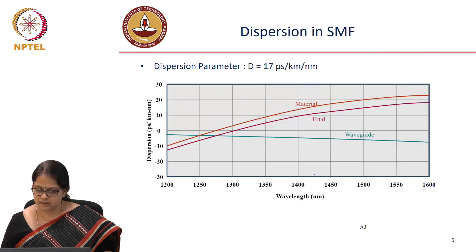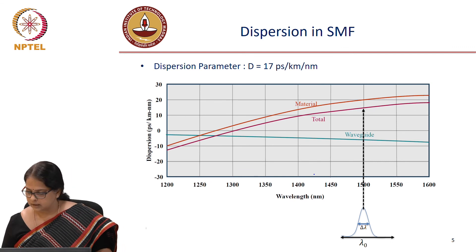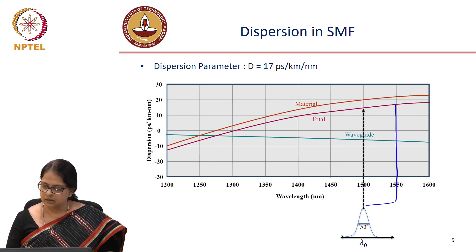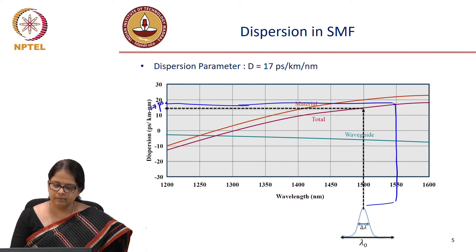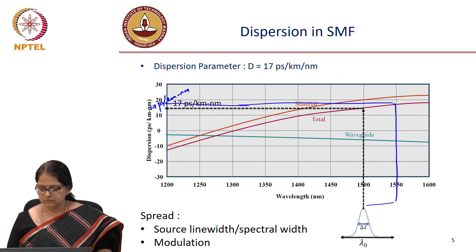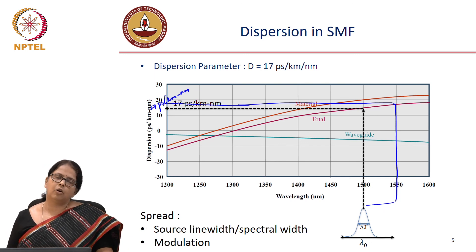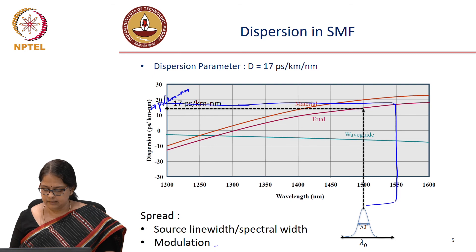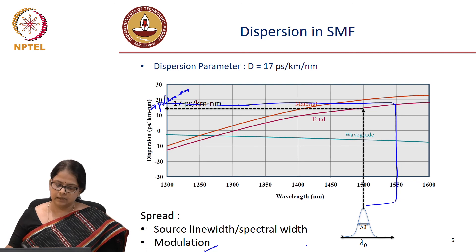Having quantified dispersion, we can verify that for 1550 nanometer, the total dispersion is about 70 picoseconds per kilometer per nanometer. The spectral spread delta lambda as mentioned could be due to the source, but typically when modulating at high speed, the spread is decided by the modulation speed. One can calculate the spectral spread based on the data rate or symbol rate and from that calculate what is the pulse broadening delta tau.